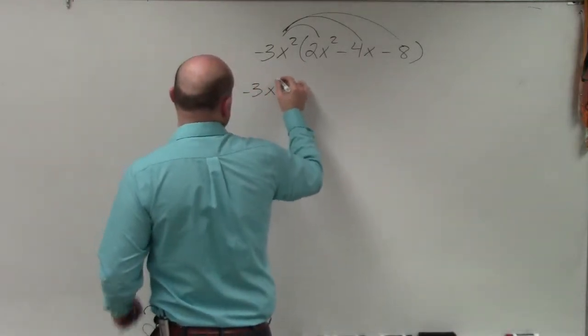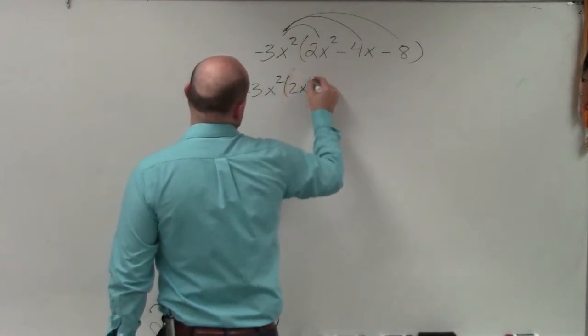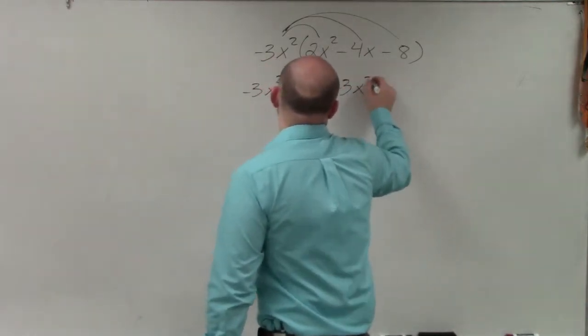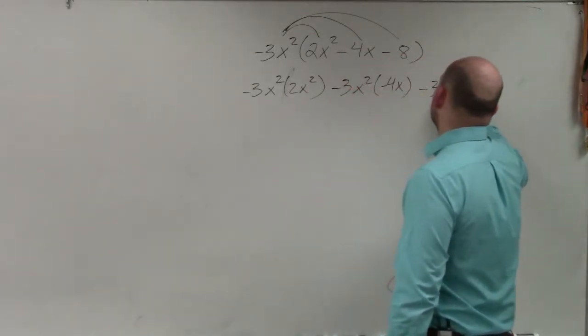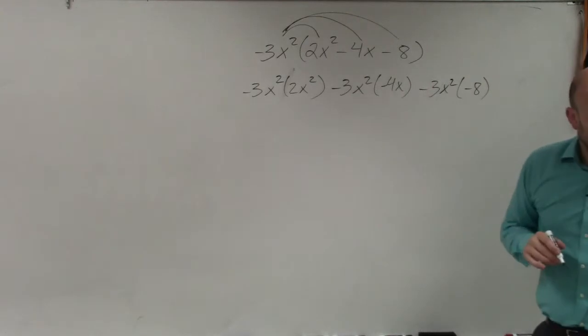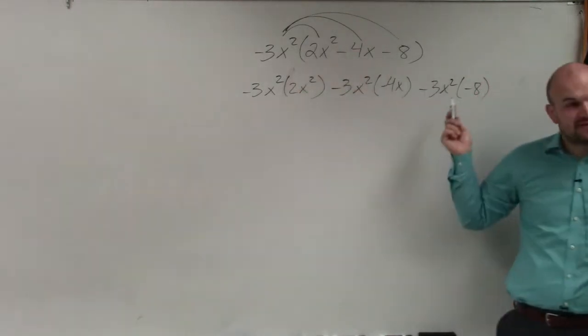So basically, I'm rewriting this as negative 3x squared times 2x squared, then negative 3x squared times negative 4x, then negative 3x squared times negative 8. Does everybody see that? You're multiplying this negative 3x squared times everything inside there.